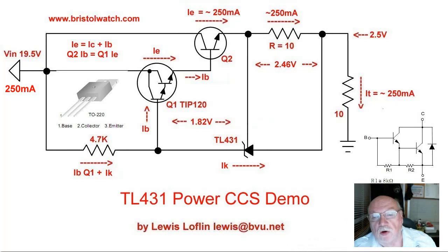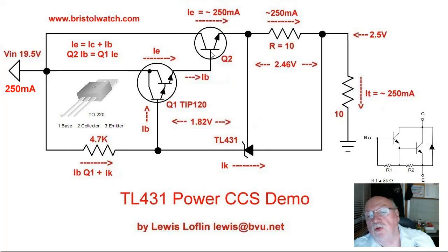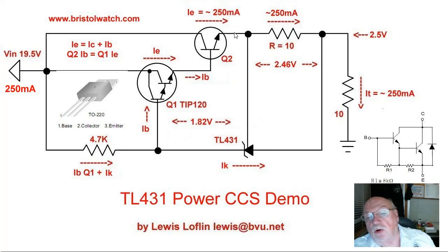Let's look closely at our circuit. The biggest difference is I connected in Q2, an NPN power transistor. The cathode of the TL431 is connected to the base of the TIP120, Q1. The emitter of Q1 goes to the base of Q2 and ties back to the reference. From R, which I changed to a 10 ohm value, connected from reference to anode — the value of R maintains a measured voltage of approximately 2.46 volts, which maintains 1.82 volts from the base of Q1 to the emitter of Q2.